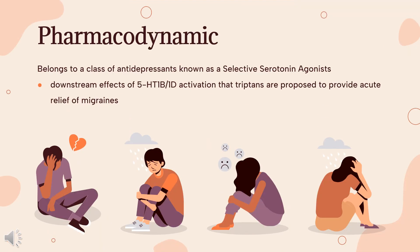Pharmacodynamics. Zolmitriptan, like other triptans, is a serotonin (5-hydroxytryptamine, 5-HT) receptor agonist with enhanced specificity for the 5-HT1B and 5-HT1D receptor subtypes. It is through the downstream effects of 5-HT1B/1D activation that triptans are proposed to provide acute relief of migraines.